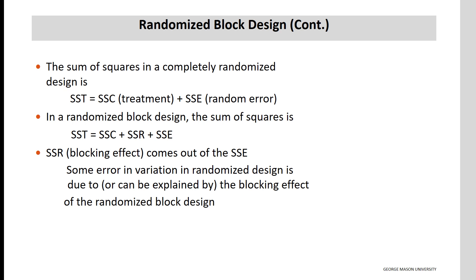In a randomized block design, the sum of squares are SST, equal to SSC, plus SSR, plus SSE. SSR is the blocking effect, or the sum of squares due to the blocking variable. Essentially, it is the second independent variable that is of secondary importance, but we would like to control for any effects that it may have on the outcome by including it in the analysis.